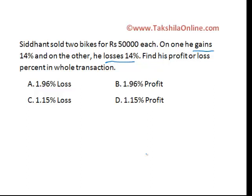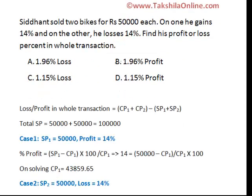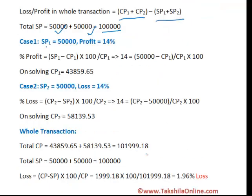There could be various ways to solve this question. Sidhan sold two bikes for rupees 50,000 each — on one his gain is 14% and on another his loss is 14%. To find the profit or loss in the whole transaction, you must know the cost price and selling price of the full transaction. Selling price is given as 50,000 each, so total selling price is 1 lakh.